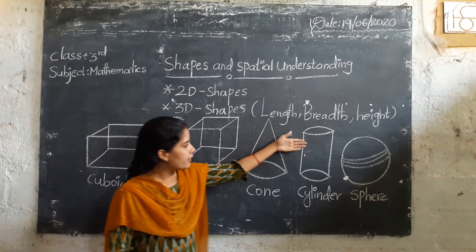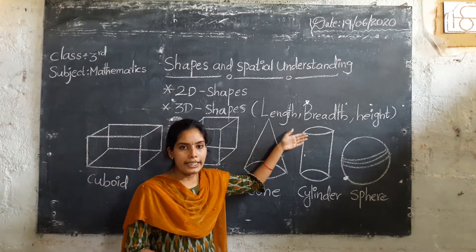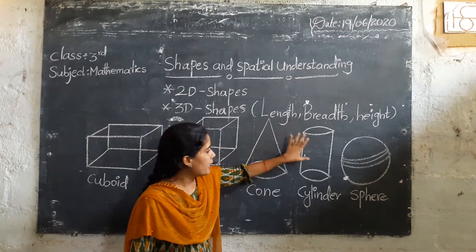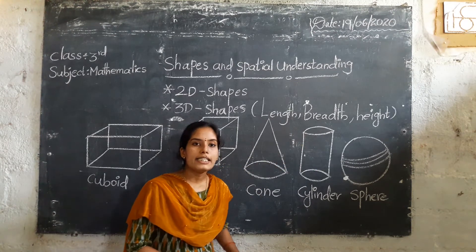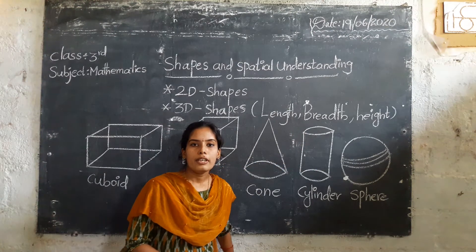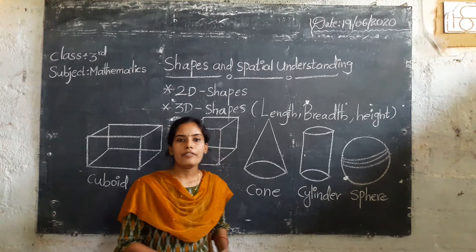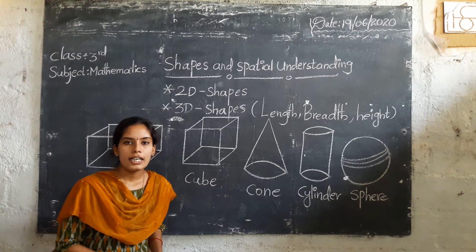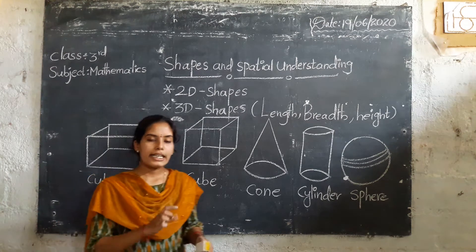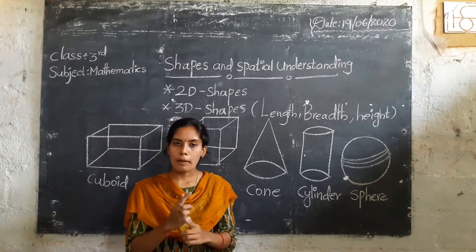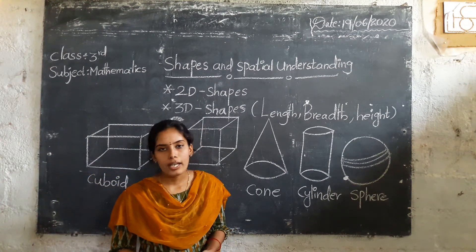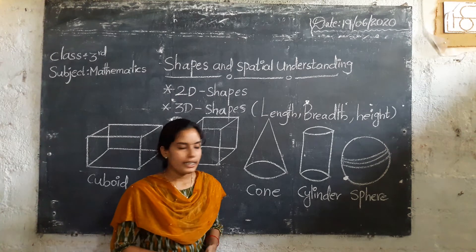And the next one is cylinder. Which shape it is? It is a cylinder shape. Do you know where we are using it? A glass, a chalk piece — which are in the shape of a cylinder.